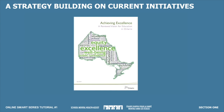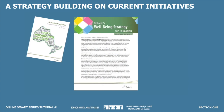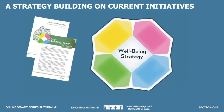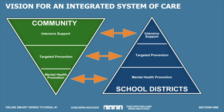Building on the goals in Achieving Excellence, the Ministry of Education has articulated a well-being strategy that aligns and highlights the outstanding work already happening every day in schools. The key components of the Ministry's well-being strategy include positive mental health, safe and accepting schools, healthy schools, and equity and inclusive education. We need to work with our partners in the health and social service sectors in order to build an integrated and coordinated system of care for children, youth, and families, and to ensure warm handoffs for students who may need more intensive mental health supports and services.